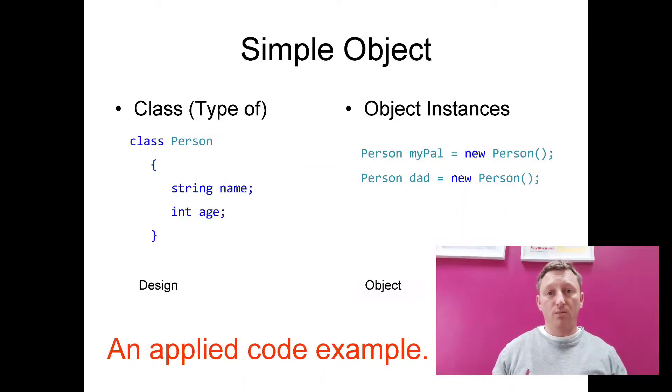And within that class, the brackets, we've got two ideas for what that person might be, how you want to look at that person. One of them is a string, which is a person's name. And secondly, we've got an integer, which is a person's age. That's all we want to say about the person in this particular design.